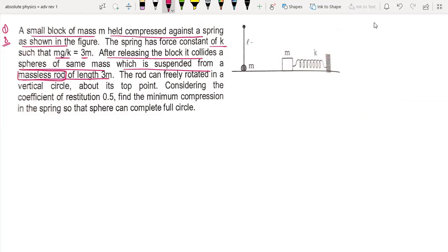This is 3 meter length. The rod can rotate in the vertical plane around the topmost point. The coefficient of restitution is 0.5. Find minimum compression in the spring so that sphere can complete full circle. So the minimum compression needed.